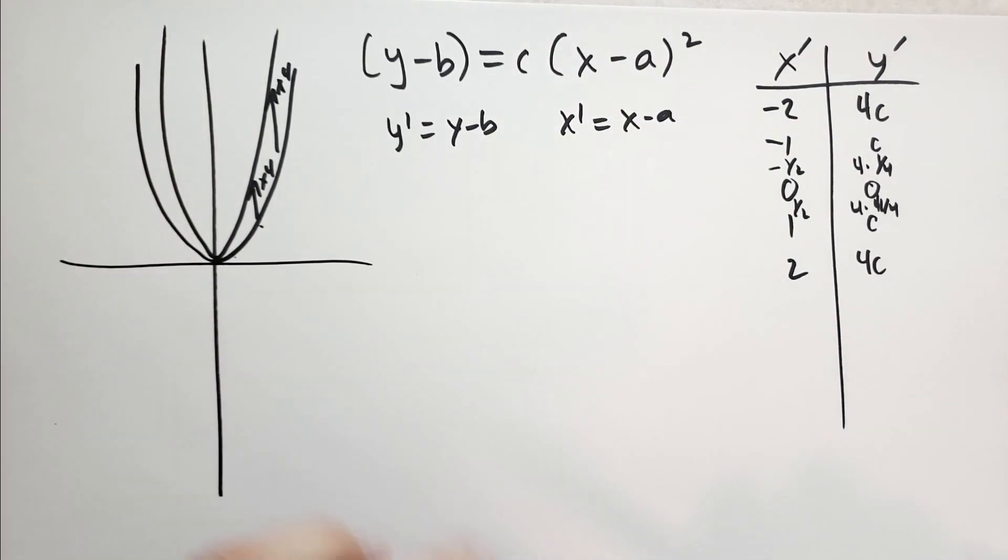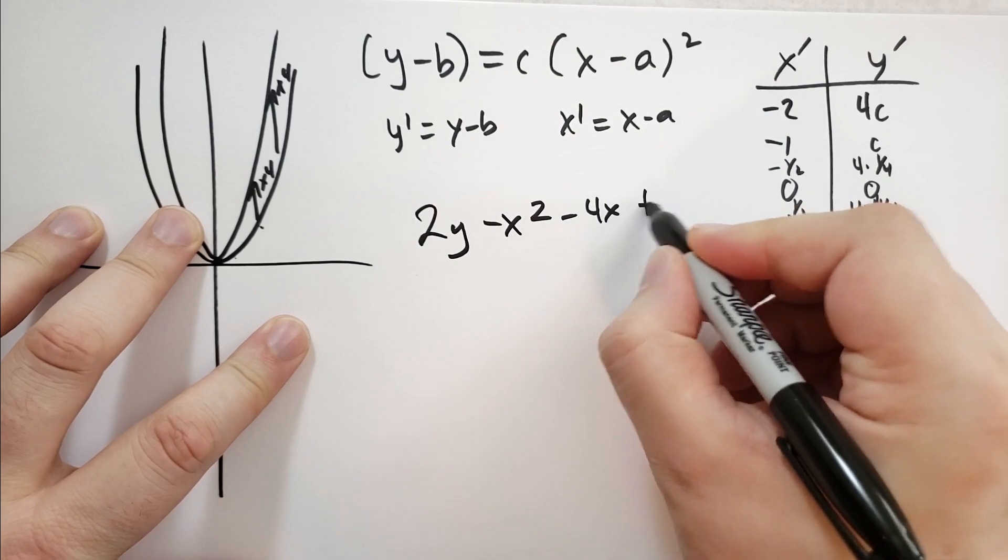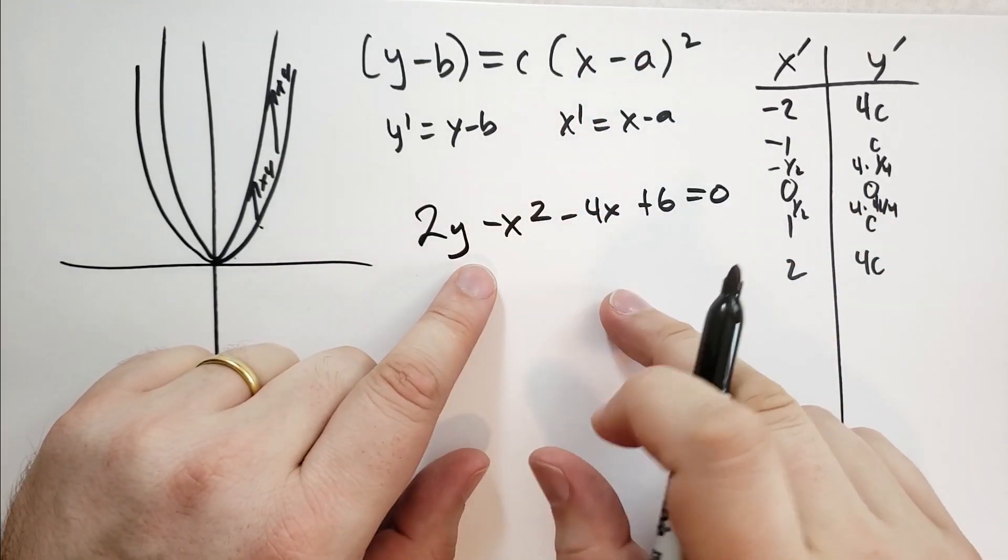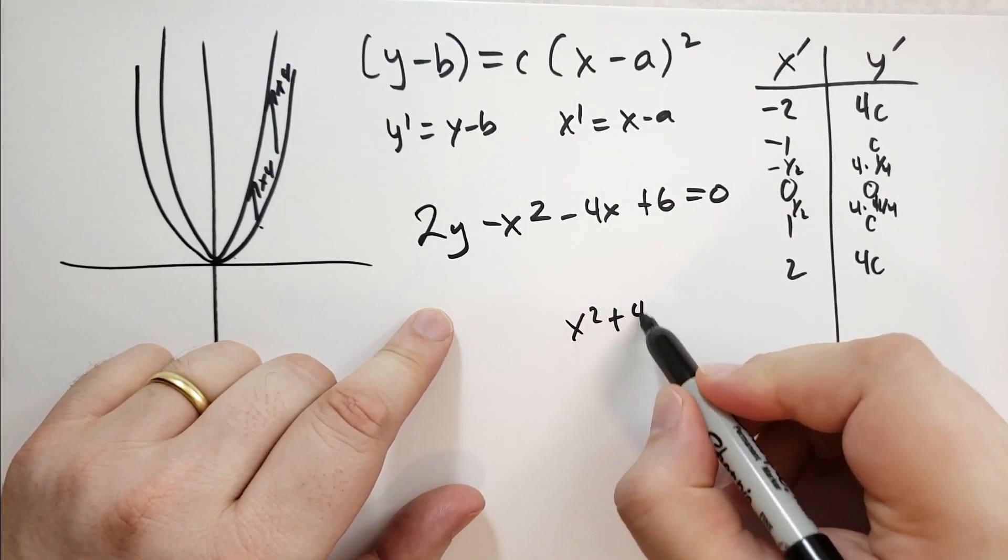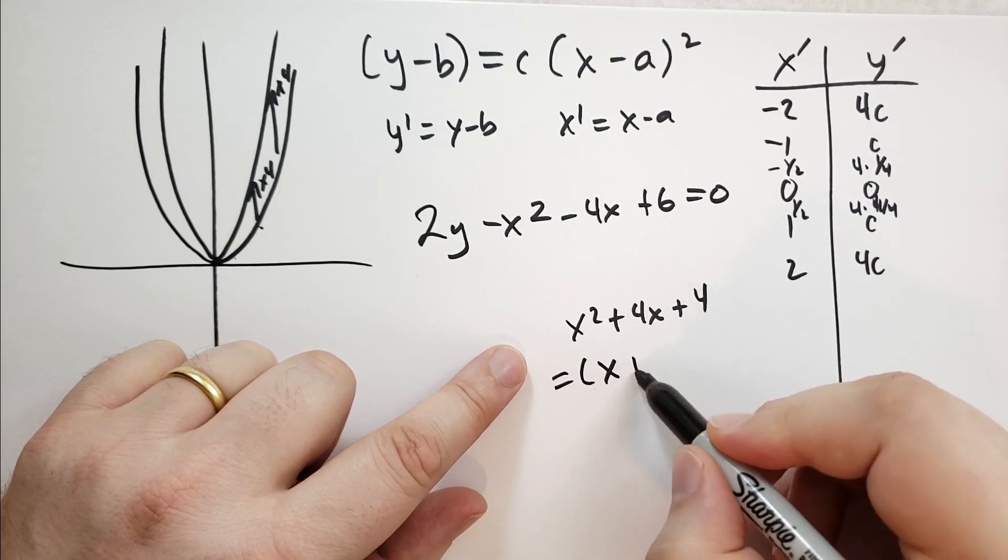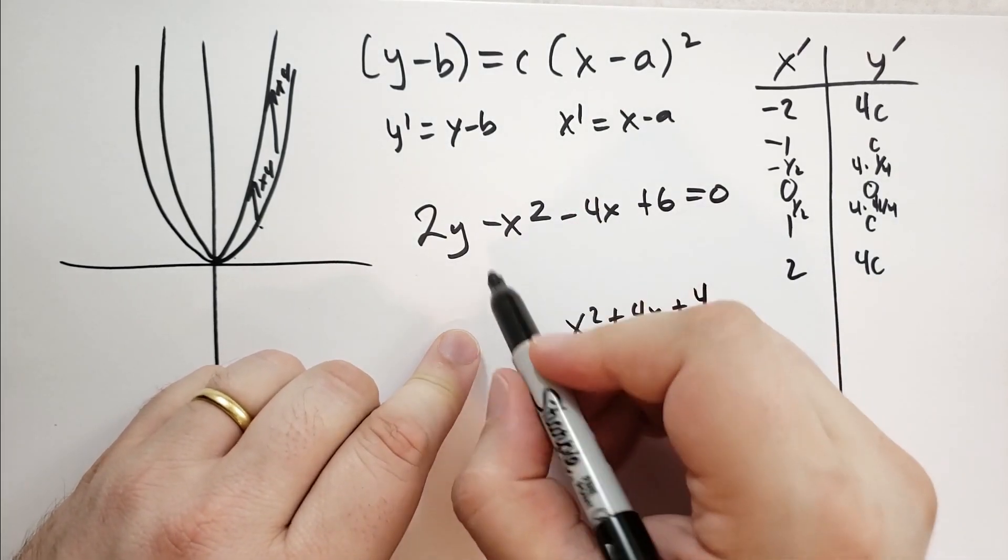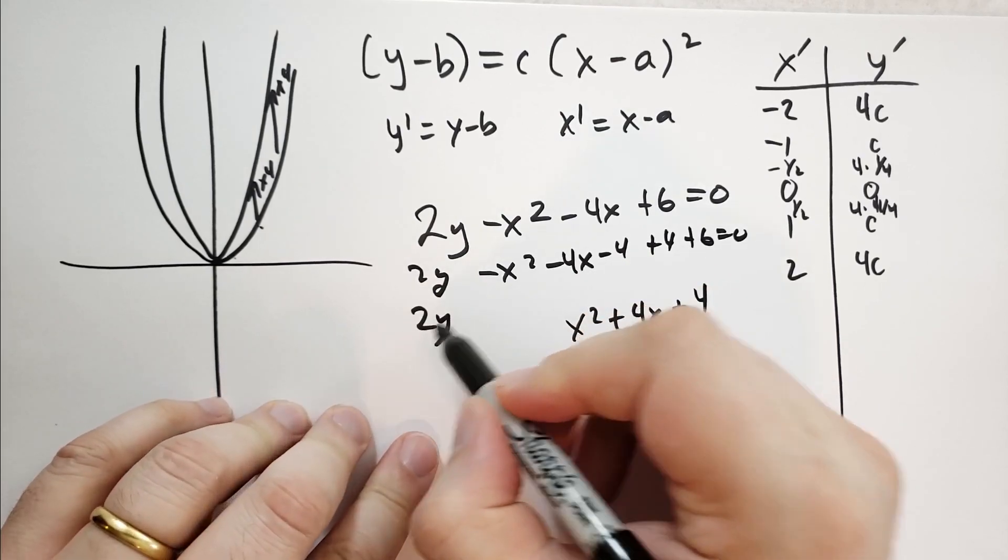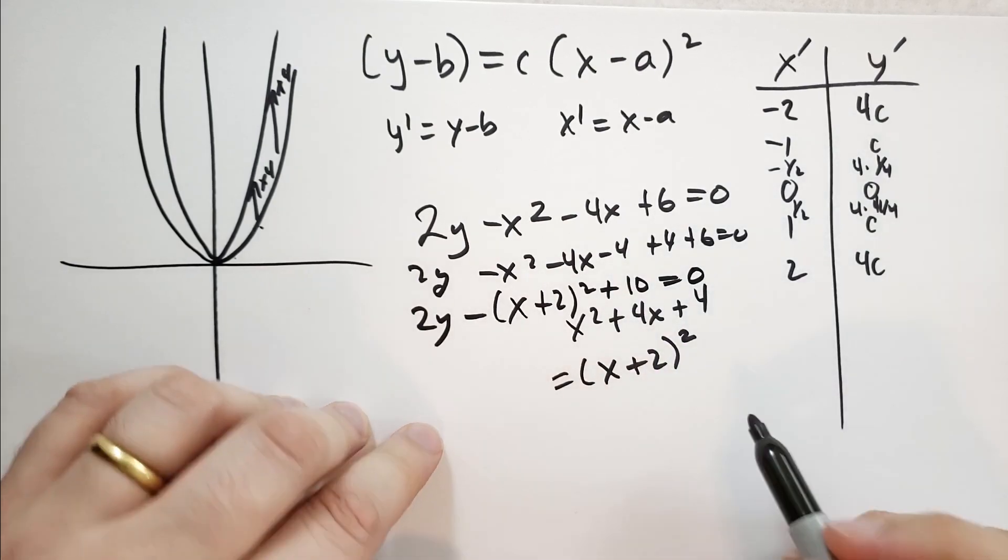So let's take an example: 2y minus x squared minus 4x plus 6 equals 0. This form doesn't look anything like what we want unless we can make it look like that. We're going to try to find an (x minus a). If we say x squared plus 4x plus 4, that would equal (x plus 2) squared. The problem is we have this plus 4 here. So we add it in: minus x squared minus 4x minus 4, and add 4 to keep it balanced, plus 6 equals 0.